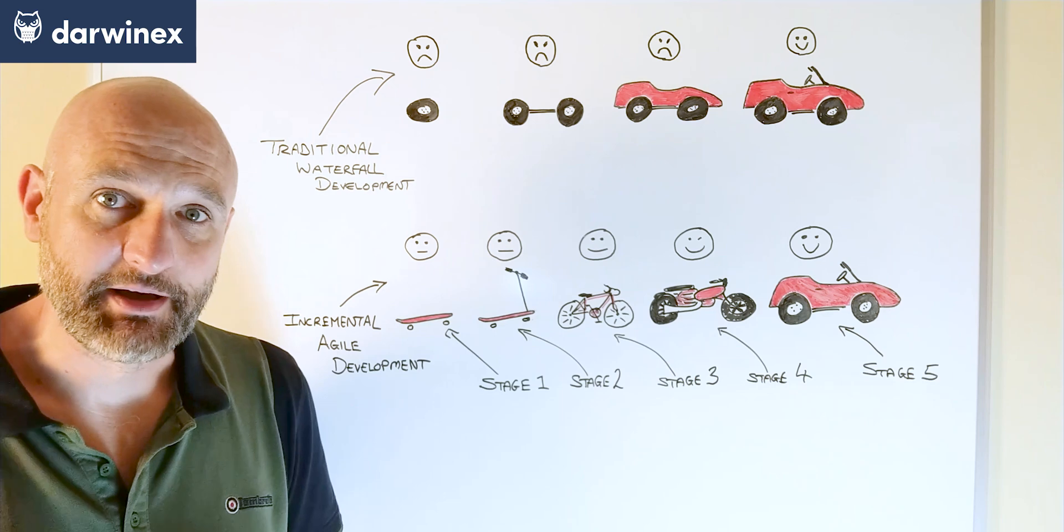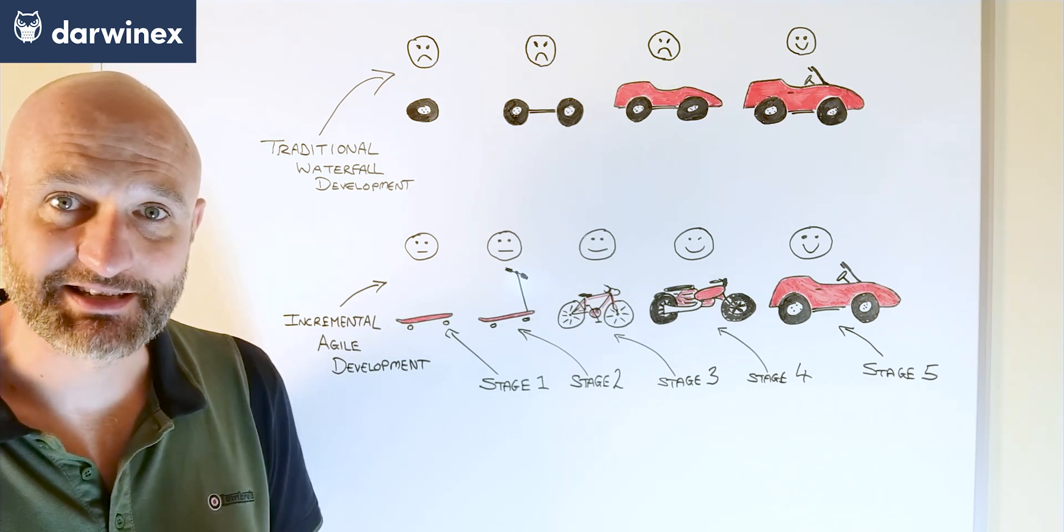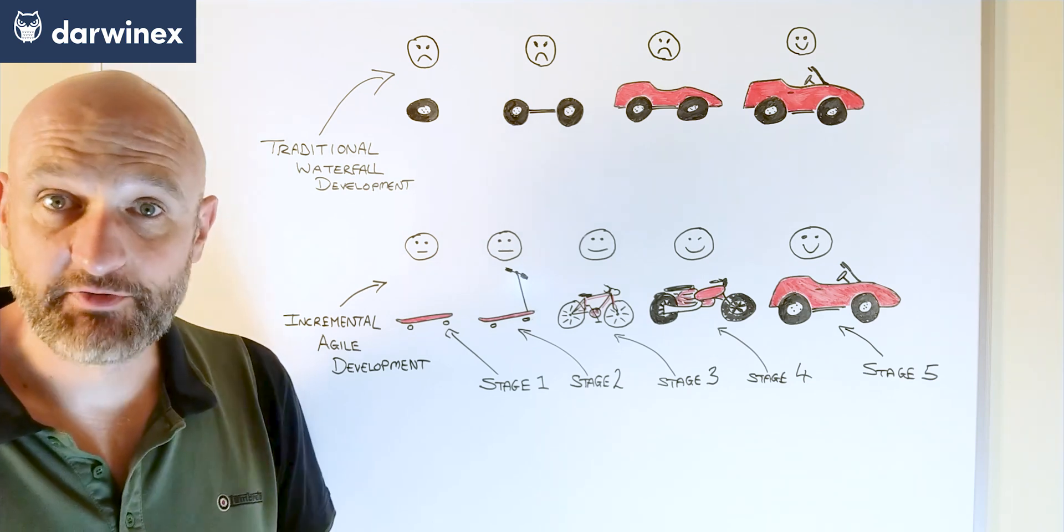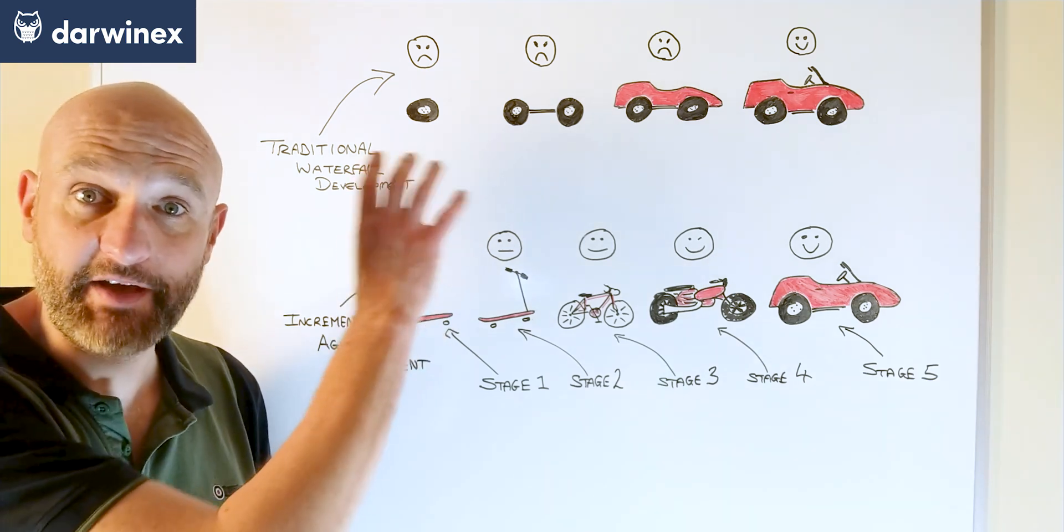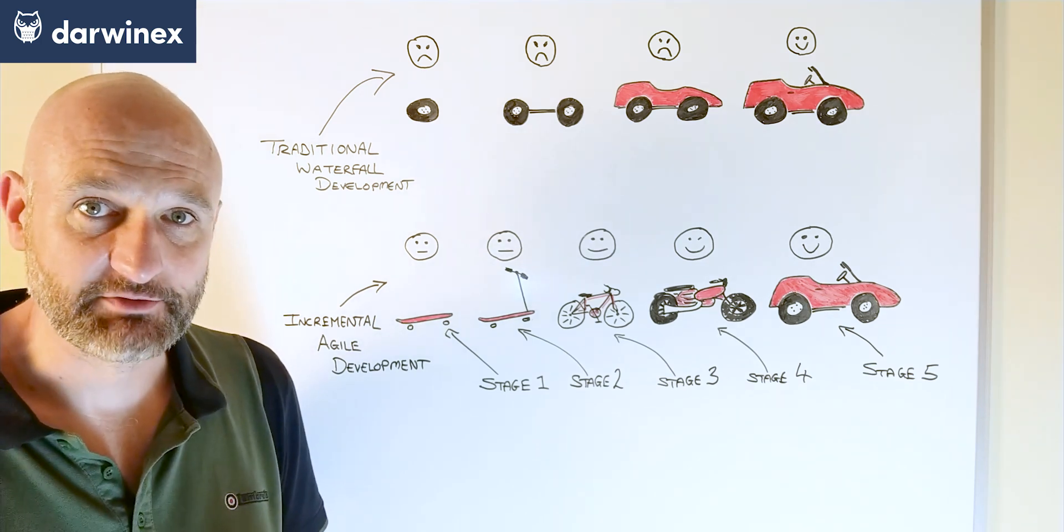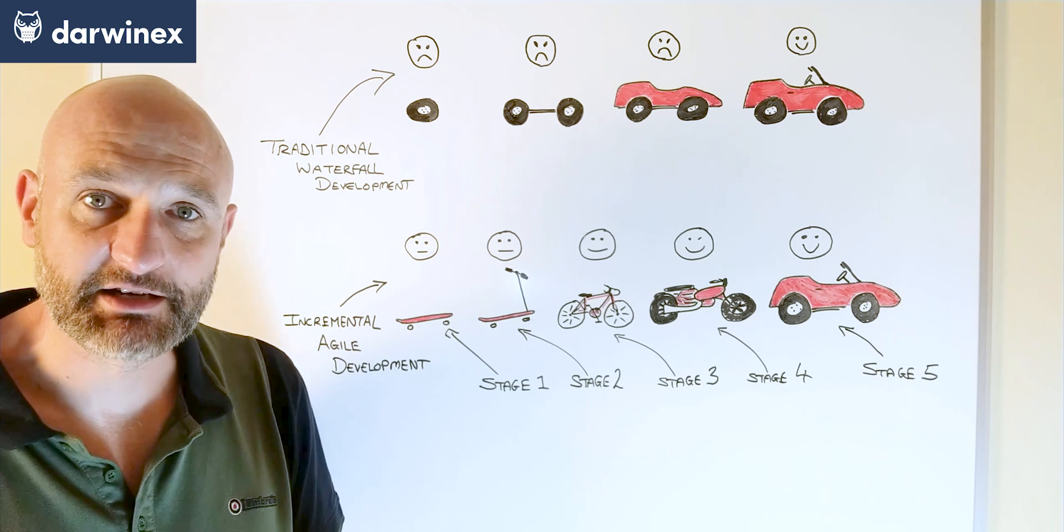With the agile methodology, at each stage of the development process the aim is to have a fully working product, so a very different approach to the one above. The deliverable at each stage won't meet all of the requirements yet of course, that won't happen until the end of the project.